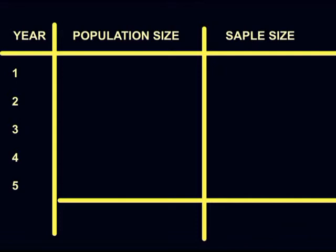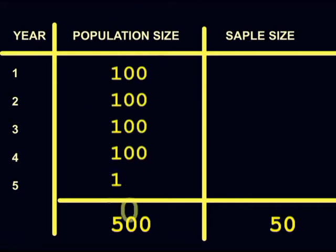Let's suppose there are 500 people. This is too many, so you are going to take a sample of 50. Let's assume there are 100 in each year. Then you could take 10 in each year as your sample.